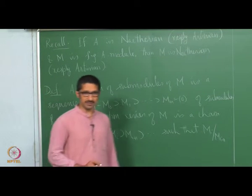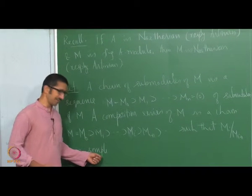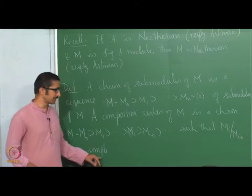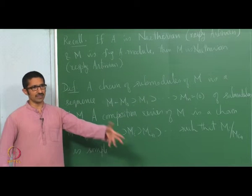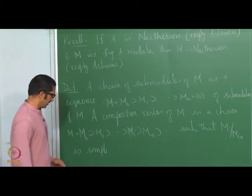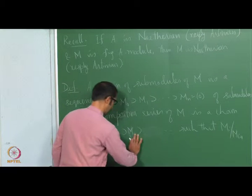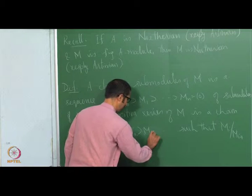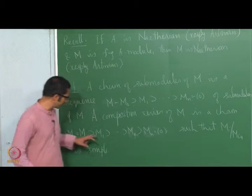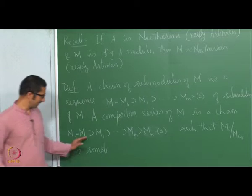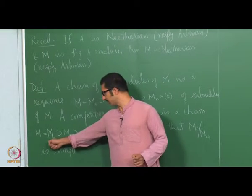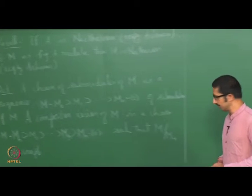What do we mean by simple? It has no non-trivial submodules other than 0 and itself. So a composition series terminates at 0, meaning M_1 is a maximal submodule of M_0, M_2 is a maximal submodule of M_1, and so on.